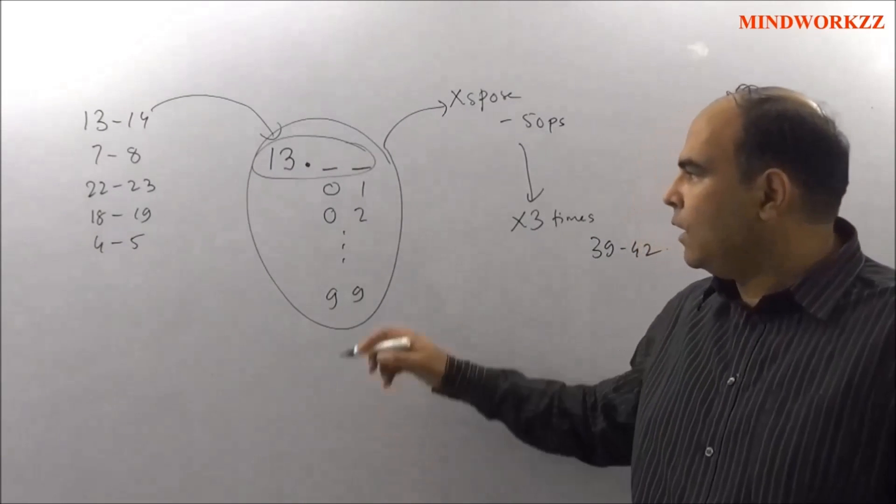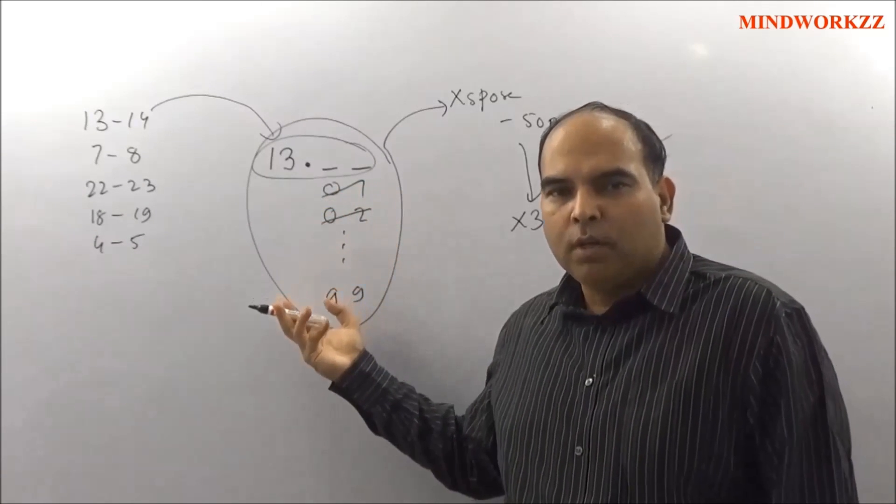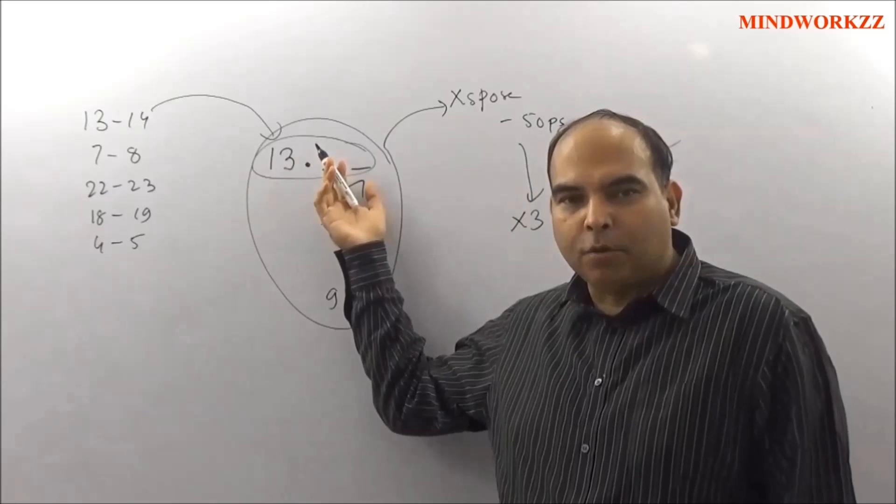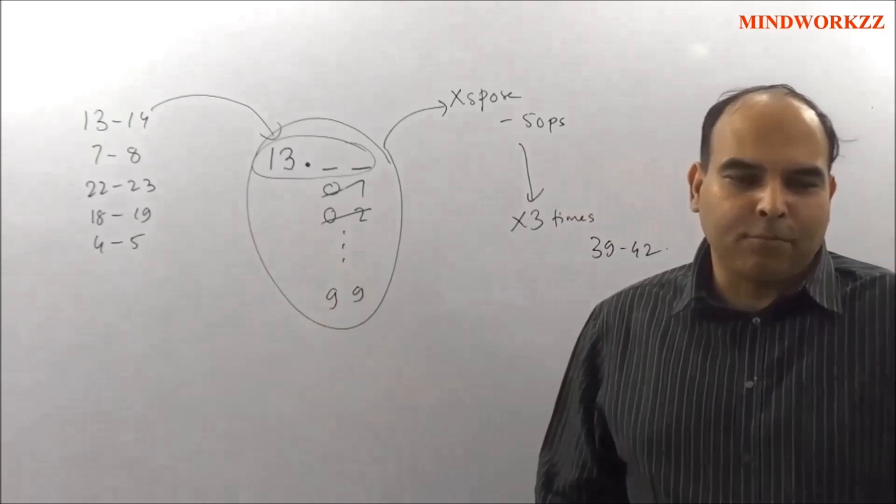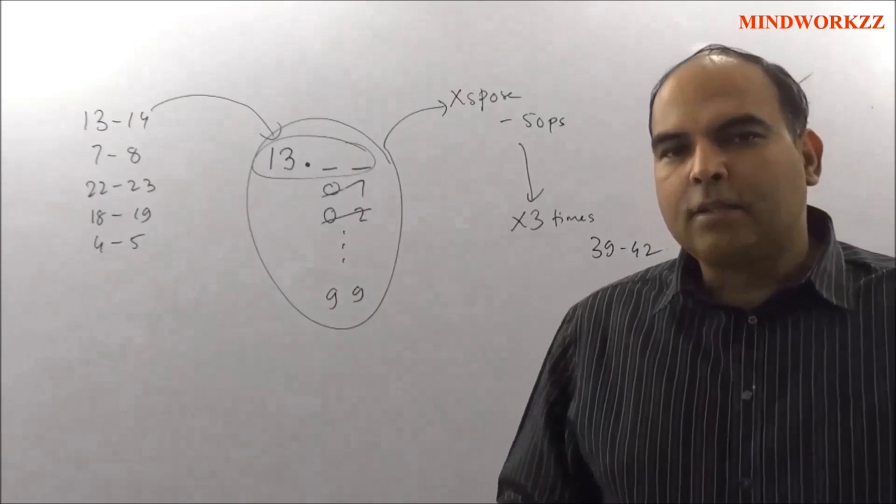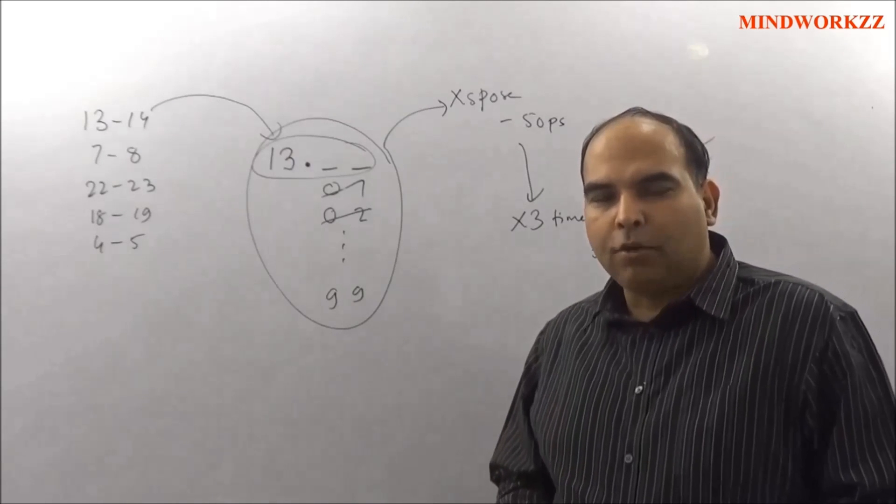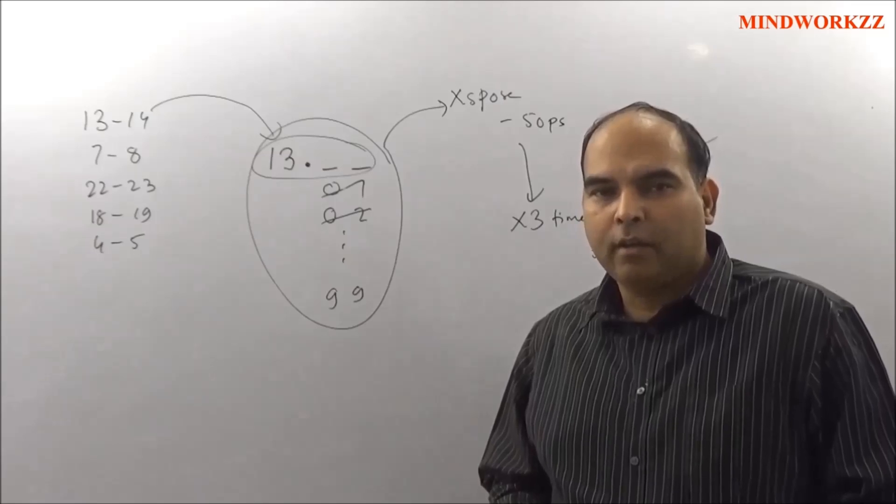Which means the transposed value here - the paise value cannot be 01, 02, just as it cannot be 99, because if a check of 13.99 is transposed, you get 99 rupees 13 paise. And after spending 50 paise, I'm quite sure you realize that that's not going to give you the 3 times the value of the check that you want.